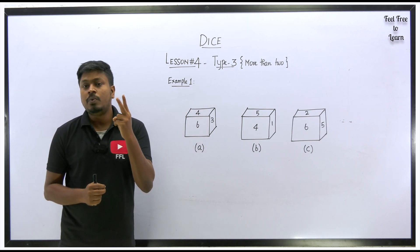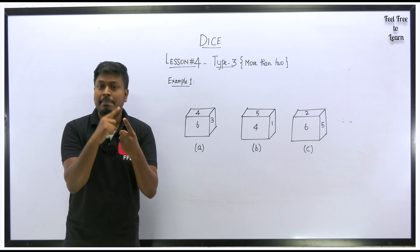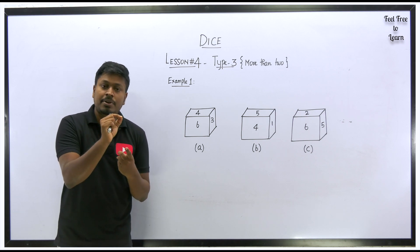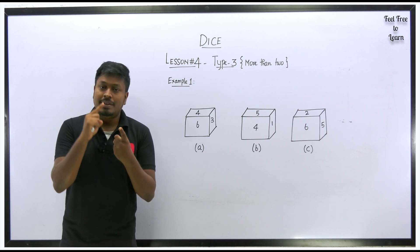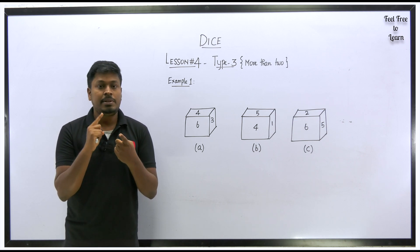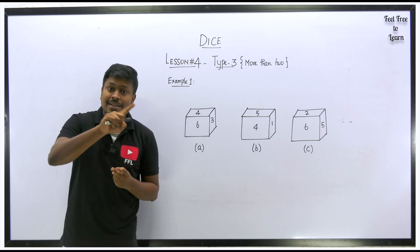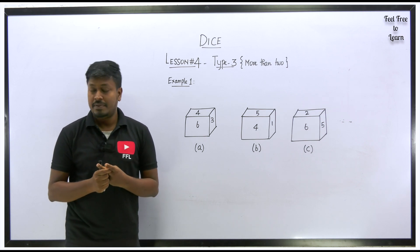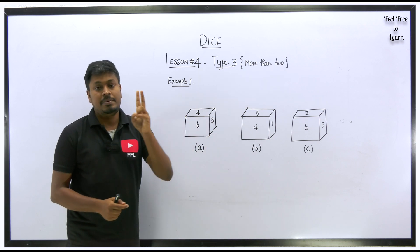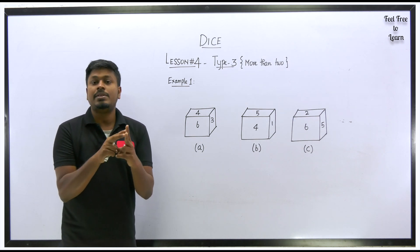In lesson number 3, I told you two important points. The first is the shortcut: find where two numbers are the same across diagrams, then from that number write the remaining numbers in a clockwise direction, and check which number is opposite to which. The second important property is: if two face numbers are common in both diagrams, then the remaining face will be opposite to each other.